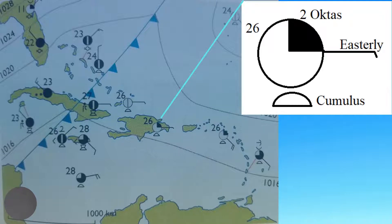The weather station over Hispaniola indicates what weather conditions are like prior to the arrival of the cold front. There are two octets of clouds in the sky and the type of cloud being shown is cumulus, which generally indicates fair weather. With few clouds in the sky, conditions will be sunny. The wind is blowing from the east, which is typical of conditions in the Caribbean, and the temperature is 26 degrees Celsius.